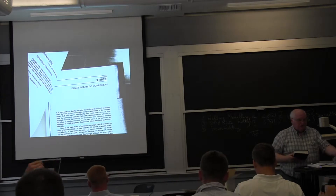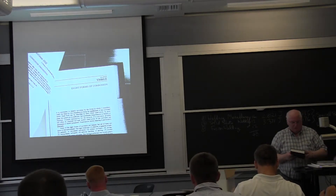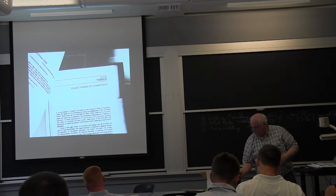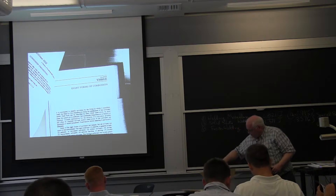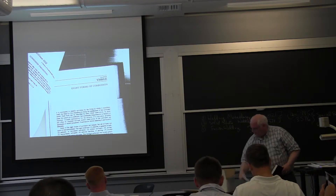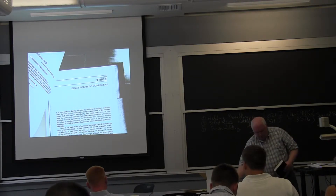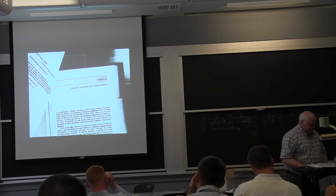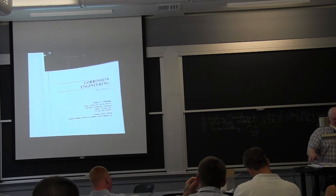Chapter three is on the eight forms of corrosion. I guess I didn't copy the index. But he talks about the eight forms of corrosion. He's one of the first people back in the 1940s when he put everything together to talk about these eight forms of corrosion. Are there only eight forms of corrosion? Of course not. It's just a way of putting things together.